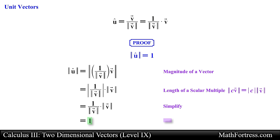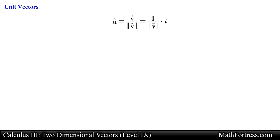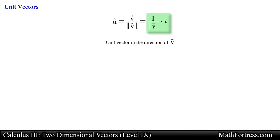In essence, all you need to do to find a unit vector is to find the magnitude of the vector and divide it into each of the components of the vector. This generates a vector with length equal to 1 while maintaining its direction. The unit vector u is usually called a unit vector in the direction of v, and the process of multiplying a vector v by 1 over the magnitude of v to get a unit vector is called the normalization of vector v.